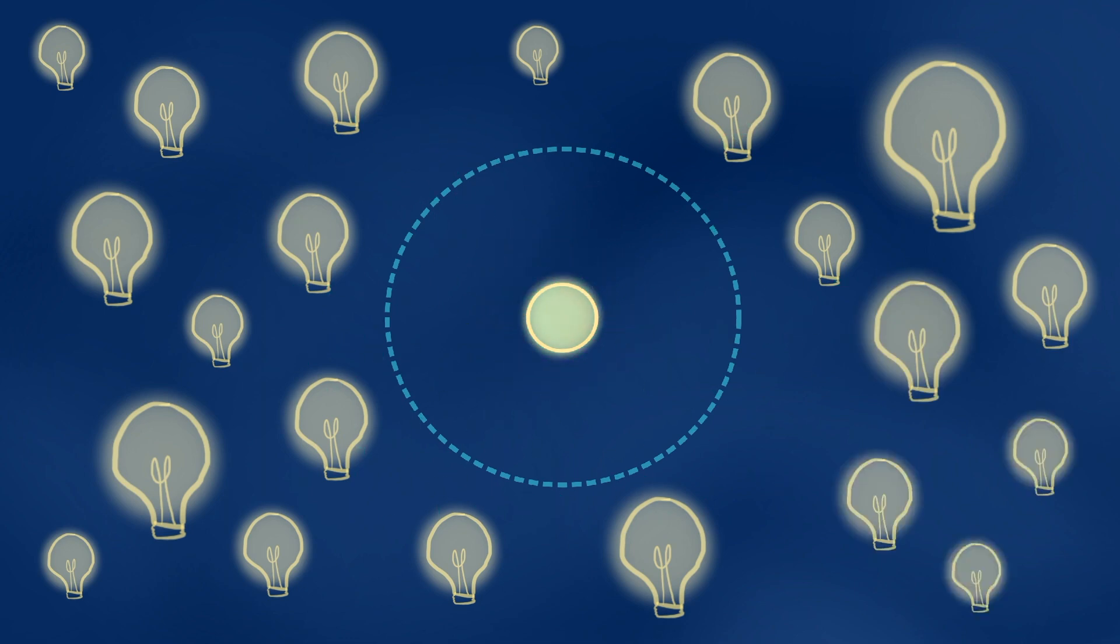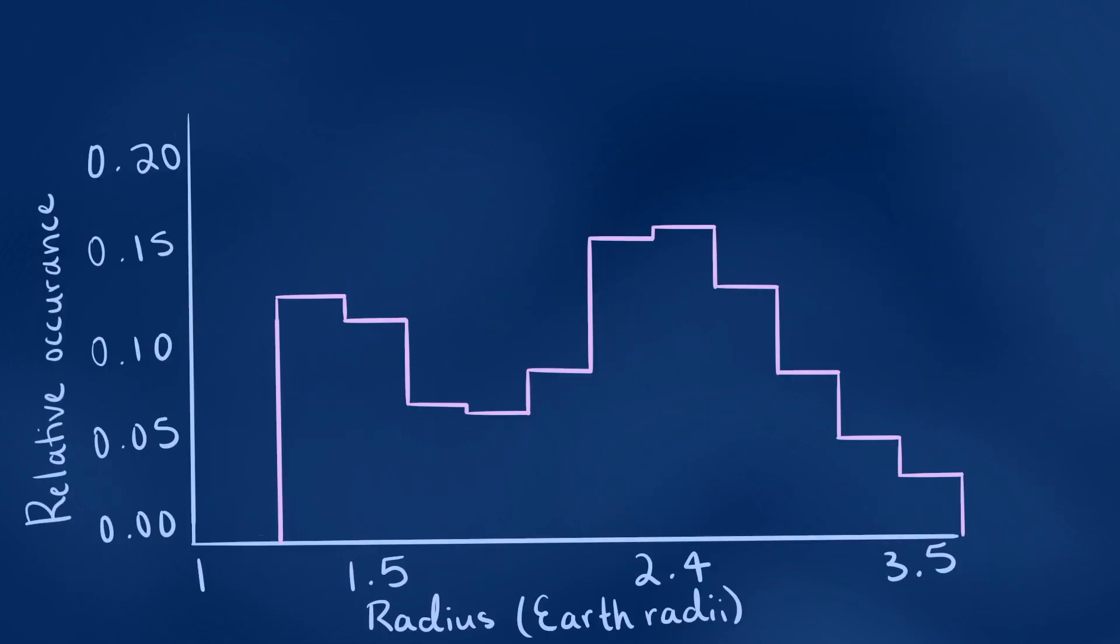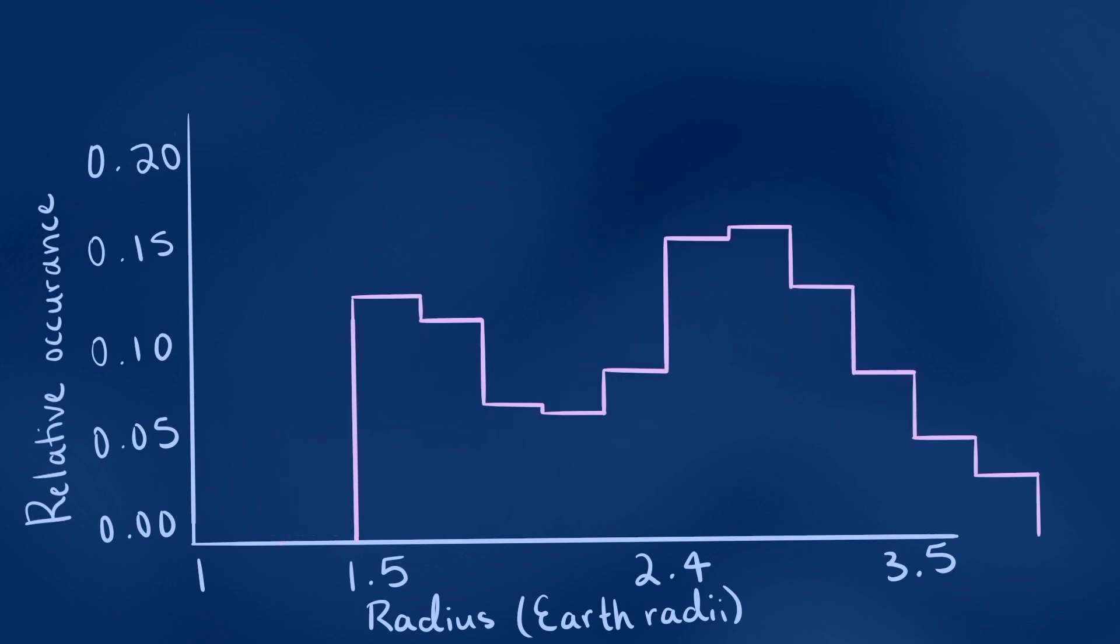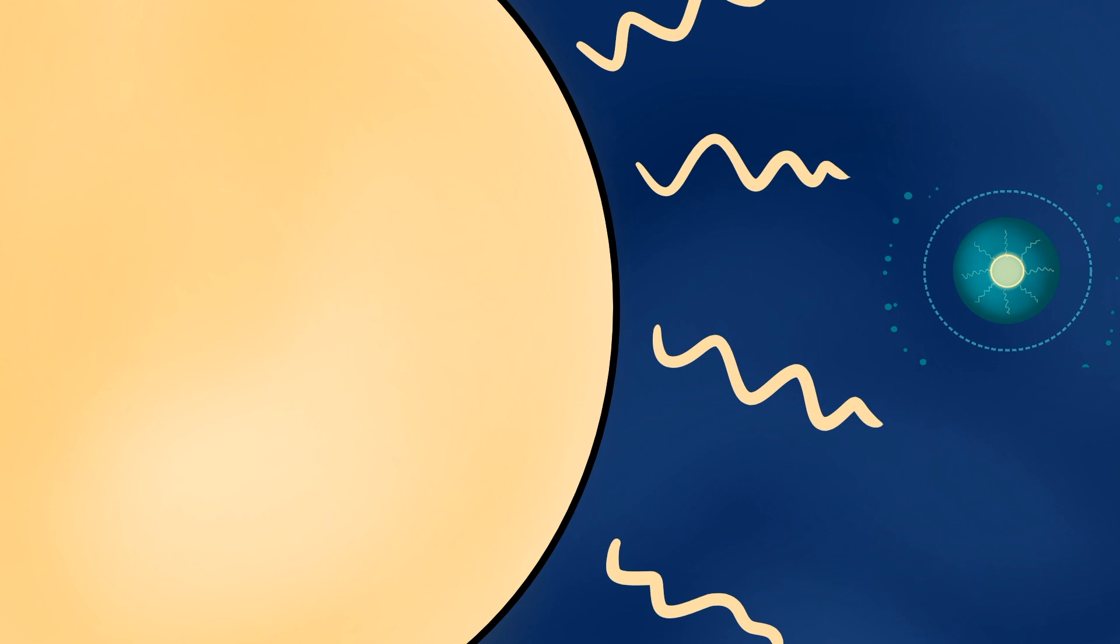For one, we can predict that the radius valley should move to larger planet sizes for planets that formed around more massive stars. This is because higher mass stars have larger luminosities, meaning they shine brighter. The higher luminosity causes any planet orbiting the star to lose its hydrogen helium envelope faster than it would if it was orbiting a lower mass star. As a result, even more massive cores can be stripped of their envelopes.